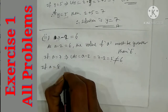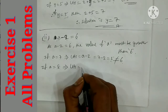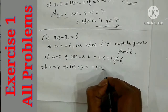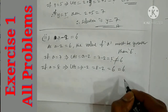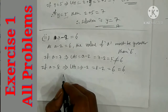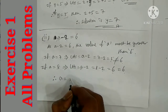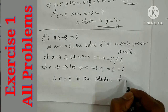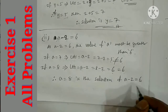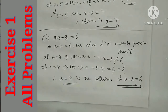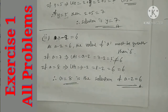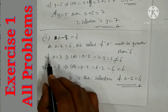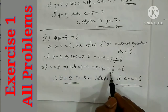If a is equal to 8, then LHS is equal to a minus 2, and the value of a is 8, so 8 minus 2 is 6. It is equal to 6, so LHS is equal to RHS. Therefore a is equal to 8 is the solution of a minus 2 equals 6.